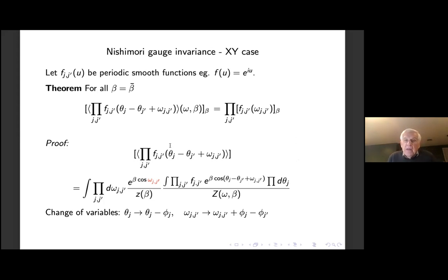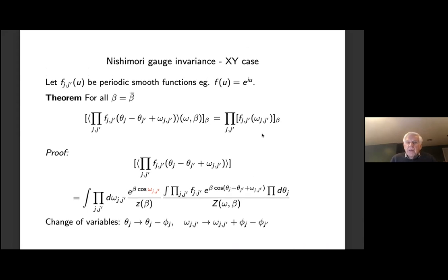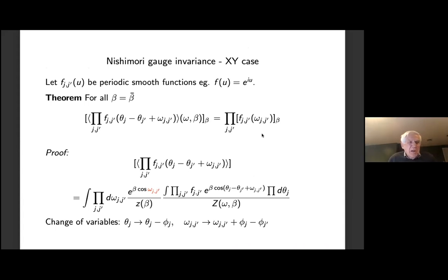Everything factors and that's the reason for this identity. The same thing works in the SU(2) case. One corollary is: if I take the partition function at inverse temperature beta divided by the volume, take the log, average over the disorder, and take a derivative, I get the expectation of the cosine, which you can compute trivially. This is analytic. So all along the Nishimori line, this logarithm of the partition function average is analytic — there's no transition in these variables. Nevertheless, there's a phase transition in terms of the spin correlations along the Nishimori line.